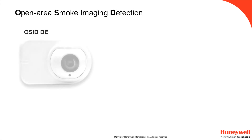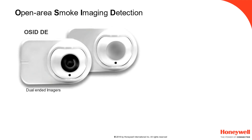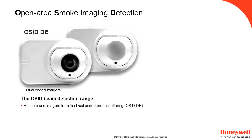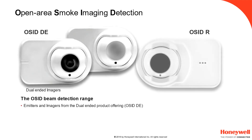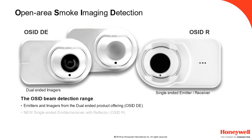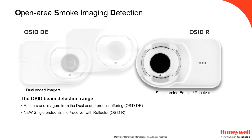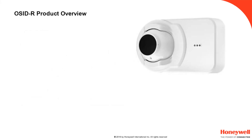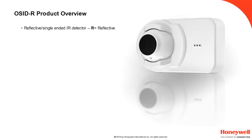The imaging smoke detector range consists of dual-ended imagers and emitters, and now the new OSID R single-ended range, used in conjunction with a reflector. The OSID R is a reflective single-ended IR detector. The R in OSID R stands for Reflective.